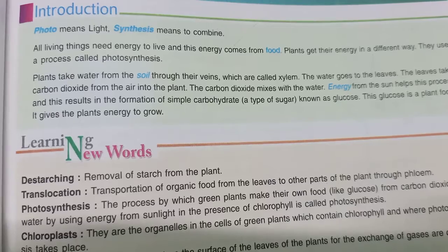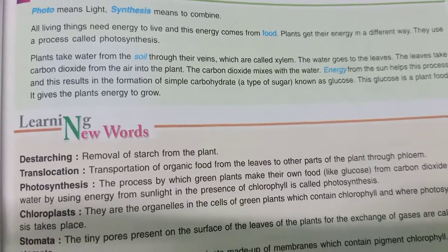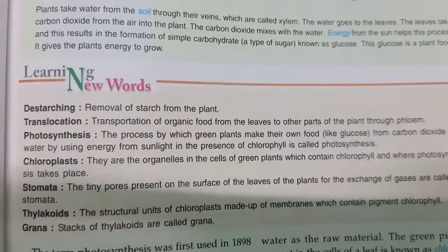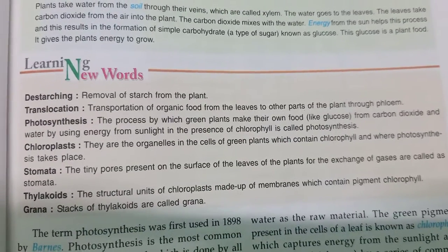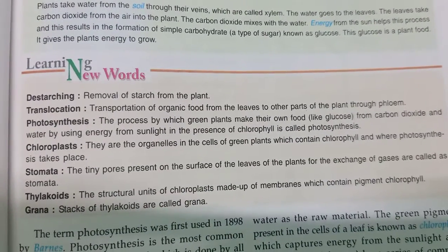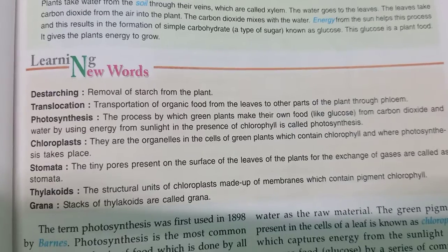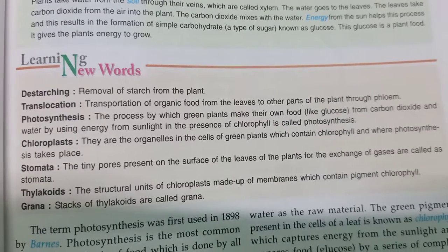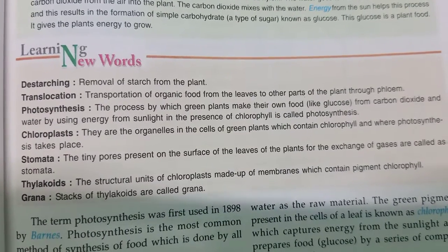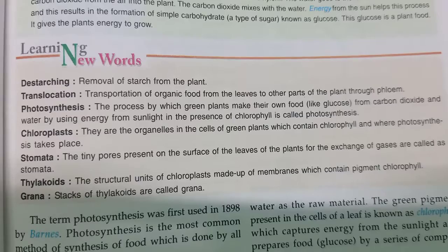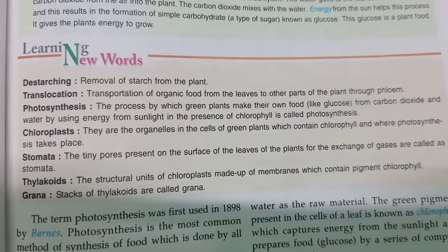Now we read some new words, which you have to write in your biology copy. The first word is de-starching — de-starching means the removal of starch from the plant. Next is translocation — translocation means transportation of organic food from the leaves to other parts of the plant through flowing.